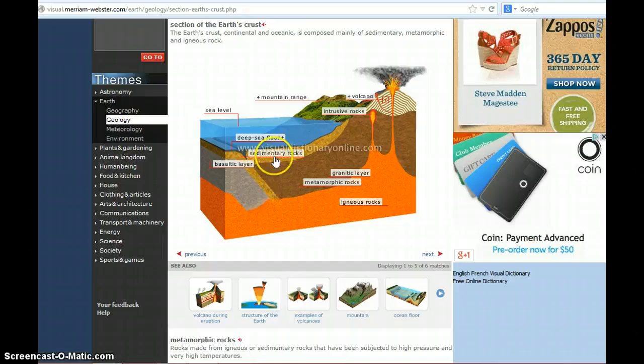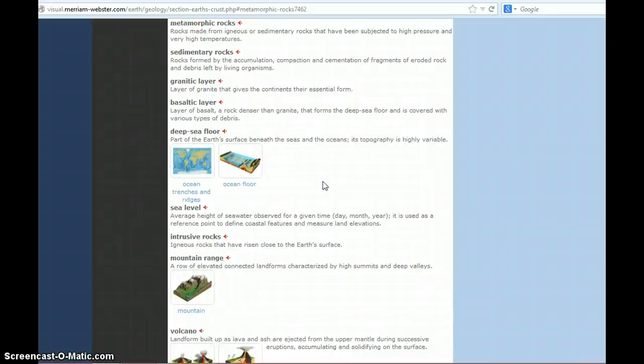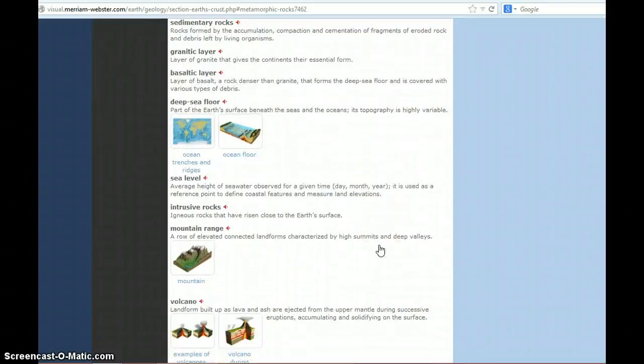So I can do a number of things. I can either click on the word in the visual, and it will take me directly to the vocabulary word. Or you might notice that all you have to do is scroll down, and there are all the vocabulary words. So the very first word is metamorphic rock.